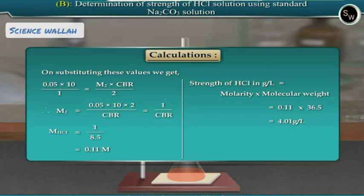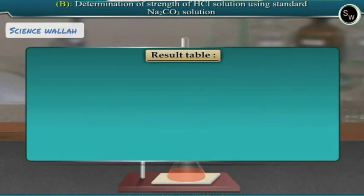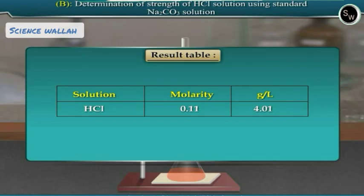On substituting these values: 0.05 × 10 / 1 = M₂ × 8.5 / 2. Therefore M₂ = (0.05 × 10 × 2) / 8.5 = 1 / 8.5 = 0.11 molar. The molarity of hydrochloric acid is 0.11 molar. Strength of hydrochloric acid in grams per liter = molarity × molecular weight = 0.11 × 36.5 = 4.01 grams per liter. Result: the molarity of hydrochloric acid is 0.11 molar and its strength is 4.01 grams per liter.